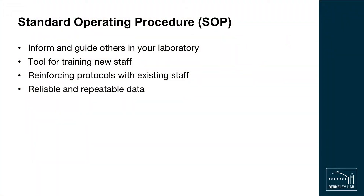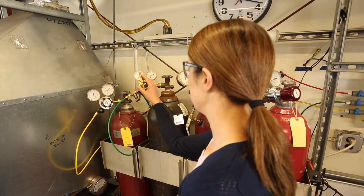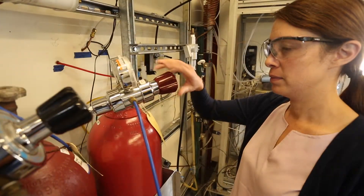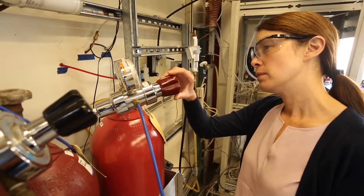A detailed standard operating procedure will include bulleted step-by-step instructions and pictures describing how to perform everyday tasks. The goal of your standard operating procedure is to inform and guide others on performing common tasks in your laboratory. It serves as a convenient tool for training new staff or for reinforcing protocols with existing staff. With a well-written standard operating procedure, staff can perform experimental tasks reliably and repeatably, and new staff can be trained and be productive in days instead of weeks or months.